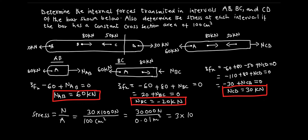This gives 3 times 10 to the power 6 newtons per meter squared, or 3 megapascals. Looking at the direction of N_CD, it will be in tension. So those are the stresses for each of the normal force cut sections. Thank you very much for watching this video.